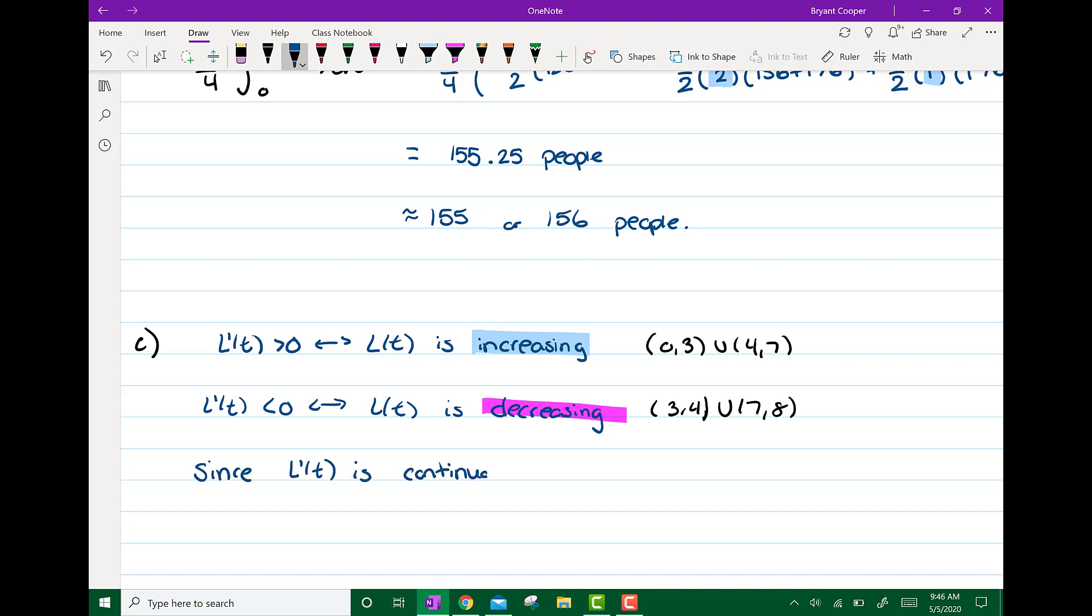So since the derivative is continuous, or since L(t) is continuous and it goes from positive to negative and negative to positive at t equals 3, 4, and 7, then by the intermediate value theorem, the derivative has to equal 0 at least 3 times.